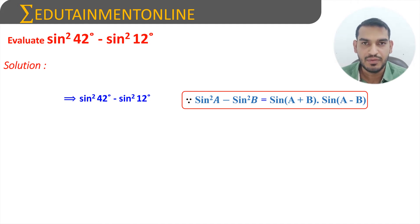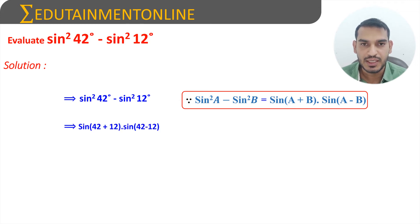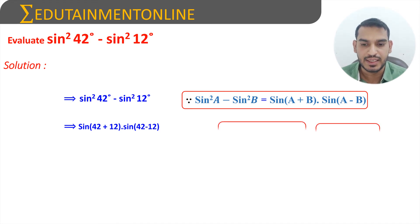So in place of a we have 42 degrees and in place of b we have 12 degrees. So sin square 42 degrees minus sin square 12 degrees can be written as sin of (42 plus 12) into sin of (42 minus 12). Now 42 plus 12 will be 54 and 42 minus 12 will be 30 degrees.